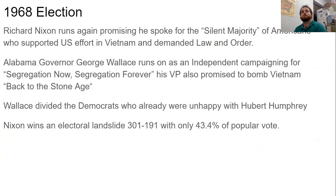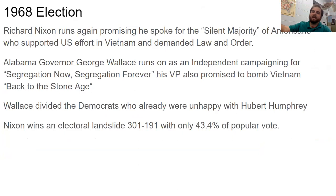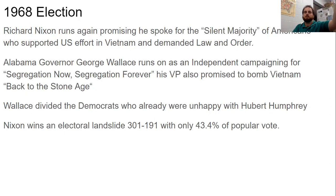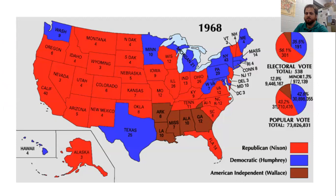Richard Nixon ran promising he spoke for the silent majority of Americans who supported the U.S. effort in Vietnam and demanded law and order. Alabama Governor George Wallace ran a separate segregationist campaign, dividing the Democratic Party — Southern Democrats voted for Wallace, Northern Democrats for Humphrey. Nixon won an electoral landslide of 301 to 191 with only 43.4% of the popular vote. Richard Nixon now had to deal with Vietnam. He became president in 1969 and began work on ending American involvement, but had to get out of the war without totally losing. Interestingly, he had wanted to be president badly back in 1960 and lost to John F. Kennedy.